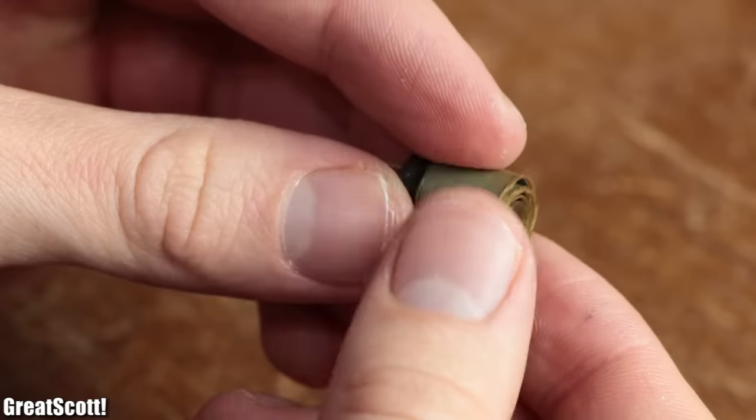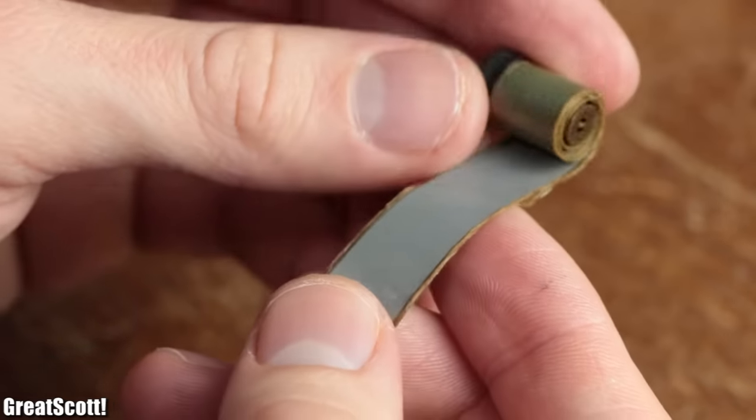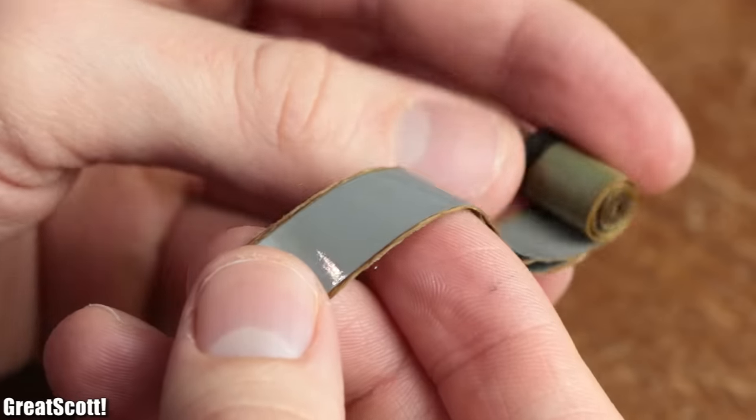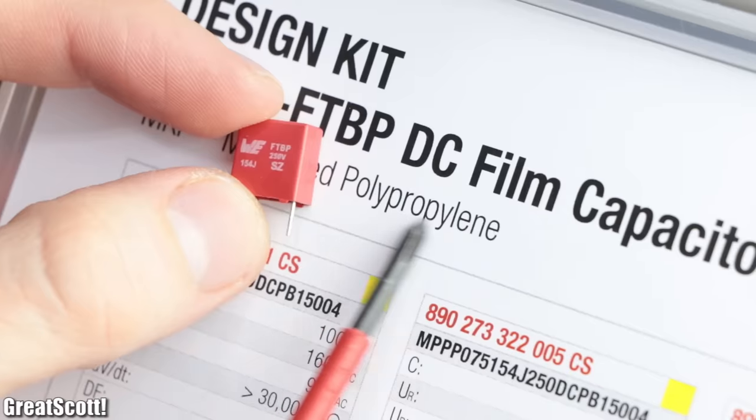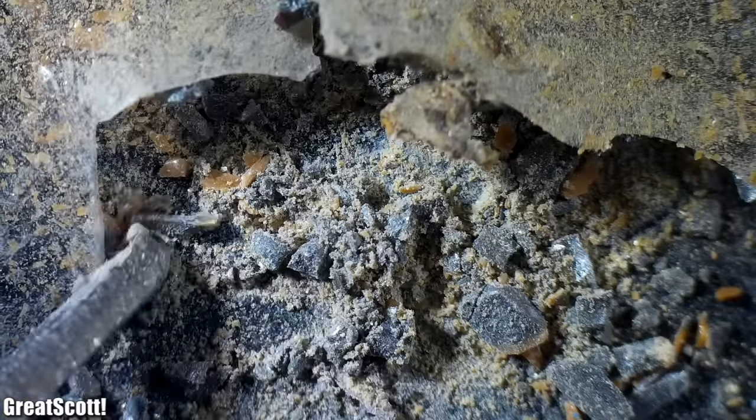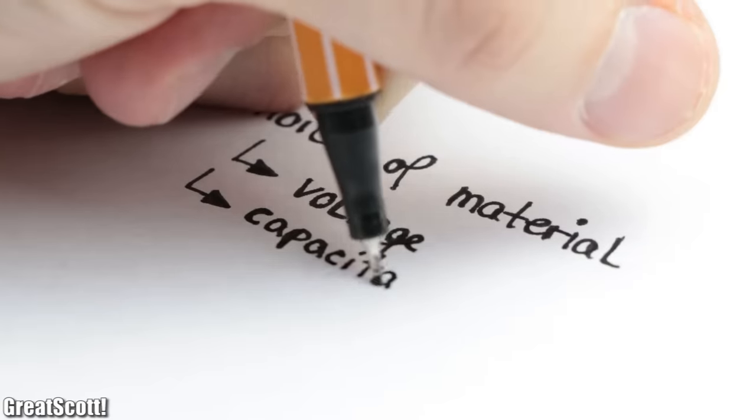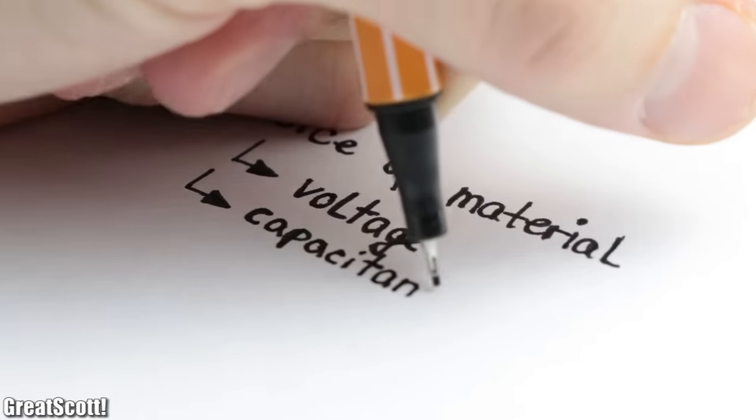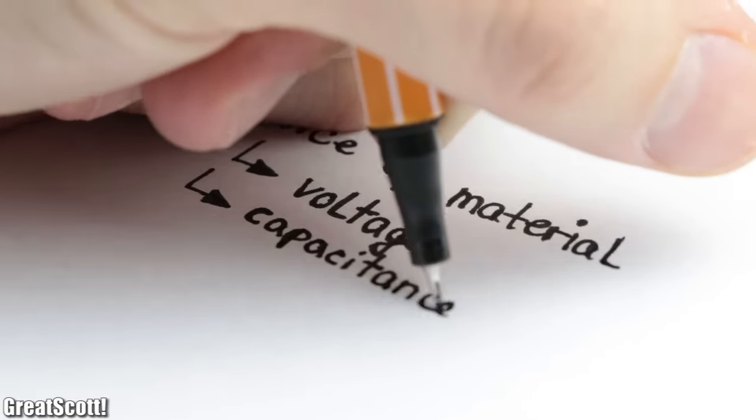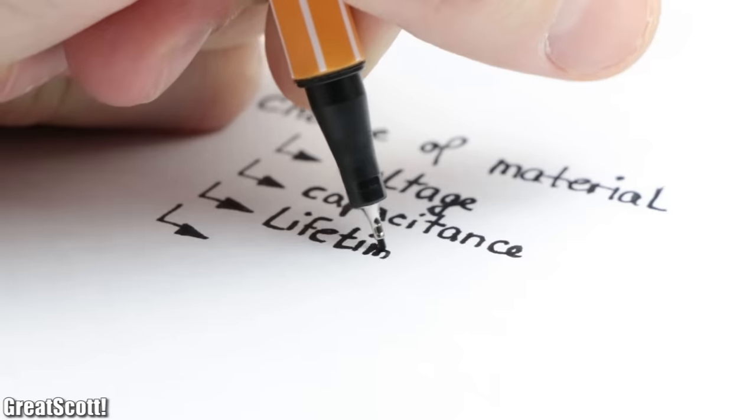My electrolytic capacitors for example, use aluminum foil in combination with an electrolyte, while my film capacitors use polypropylene and my ceramic capacitors use, like the name implies, ceramic. This material choice influences electrical properties, like the voltage or capacitance, but also other properties.